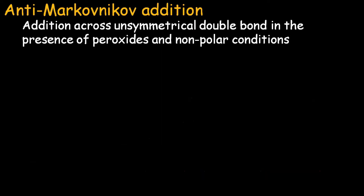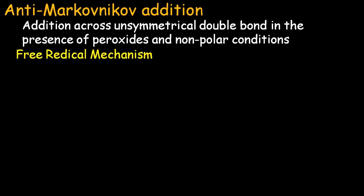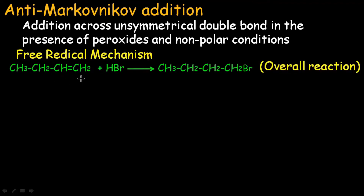Now let's talk about anti-Markovnikov addition. It is the addition across an unsymmetrical double bond in the presence of peroxides and non-polar conditions. Anti-Markovnikov addition is antagonistic to Markovnikov addition. The attacking reagent should be a peroxide and the reaction conditions should be non-polar, such as in the presence of THF. The reaction proceeds via a free radical mechanism, and when HBr adds into the unsymmetrical alkene under these conditions, the less substituted product forms.